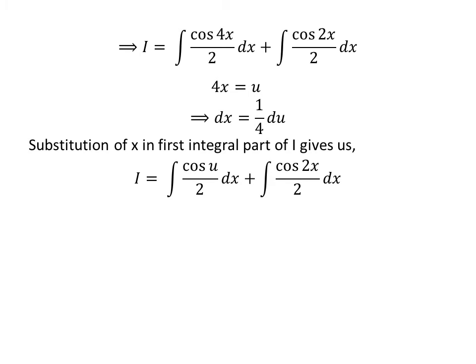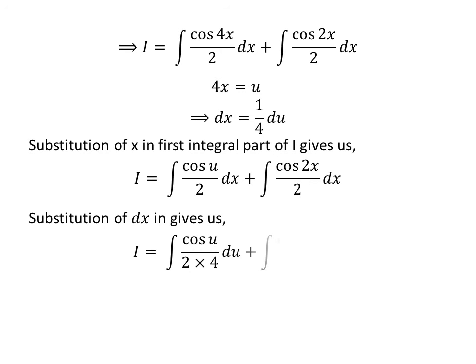Let us substitute 4 times x by our assumed value in the integral of cosine of 4 times x upon 2 with respect to x. So, i is equal to the integral of cosine of u upon 2, plus the integral of cosine of 2 times x upon 2 with respect to x. After substituting dx, i is equal to the integral of cosine of u upon 2 times 4, with respect to u, plus the integral of cosine of 2 times x upon 2 with respect to x.